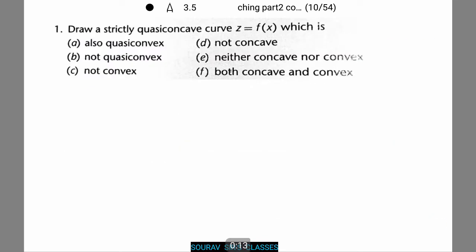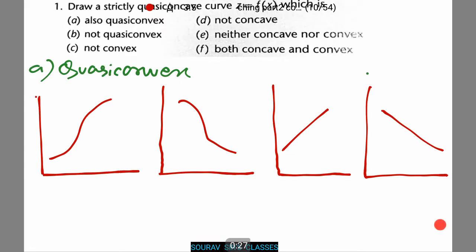Now firstly I'll start from the very beginning. We need to draw a strictly quasi-convex curve for z equals fx, which is for the first one also quasi-convex. Let's see how it looks like. These are the following acceptable curves for quasi-convex.